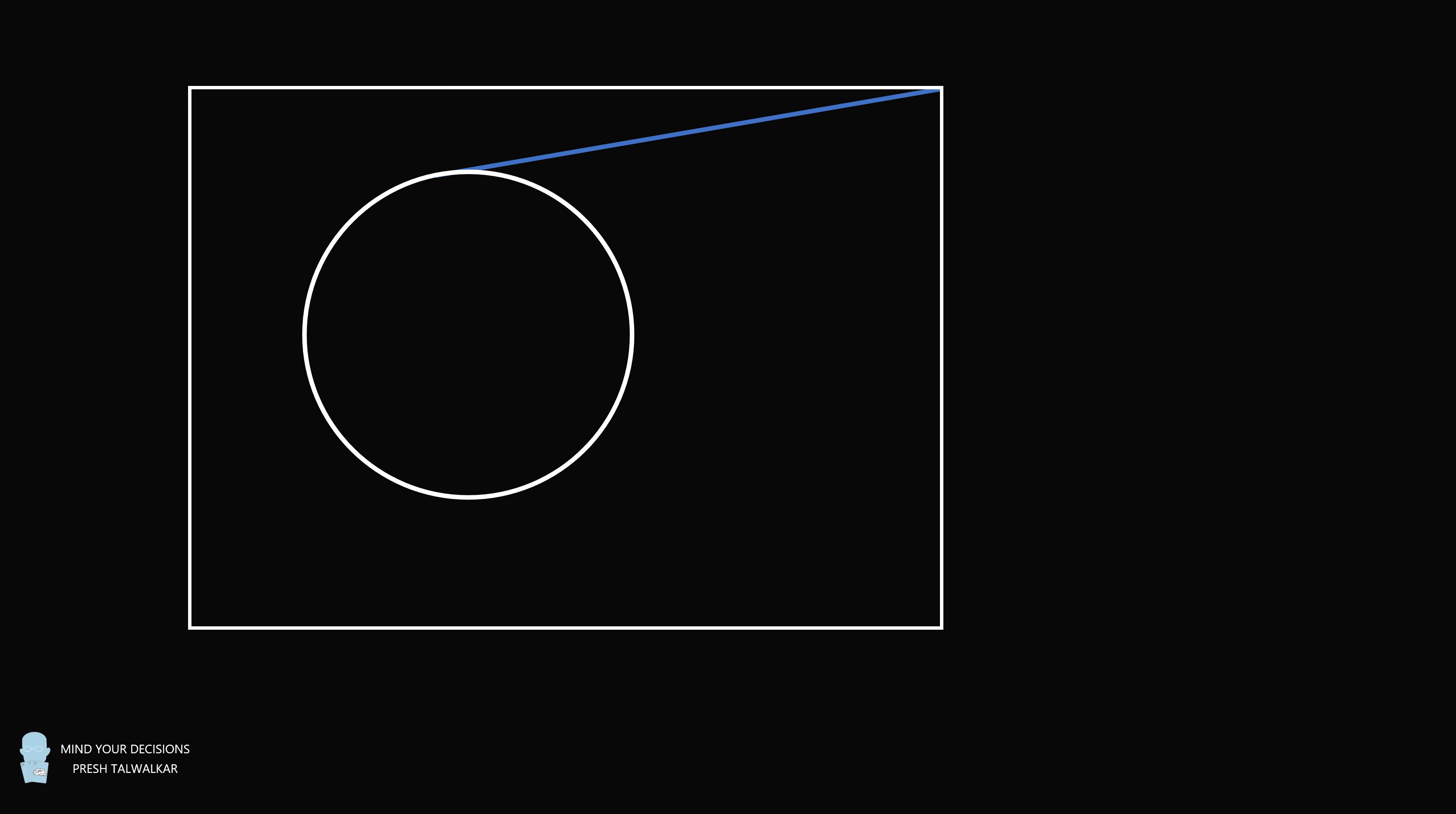Hey, this is Presh Talwalkar. A rectangle contains a circle. From each corner of the rectangle, construct a tangent line to the circle. Starting from the northeast corner, the lengths of the tangent lines are equal to 46, 31, 34, and x. The question is to solve for the length x.